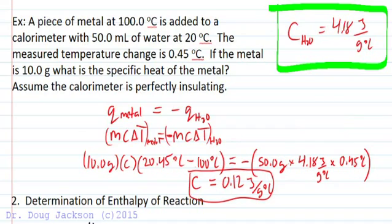So be sure that when you multiply everything out, you divide by 10 grams and then divide by the negative 79.55 that we get from this parentheses operation so that we don't end up multiplying when we should divide. So make sure you get it in the calculator correctly and get the same answer.